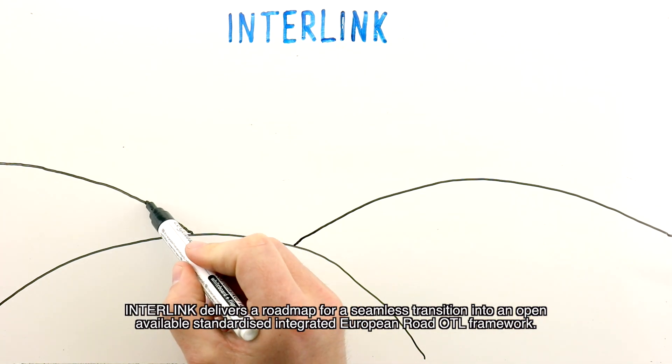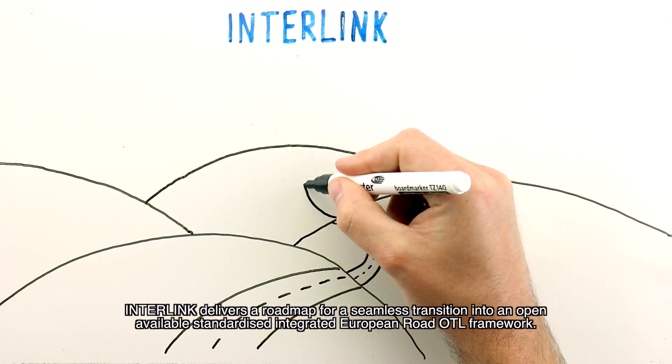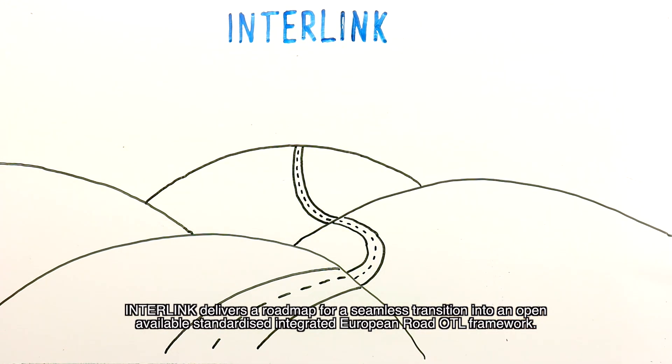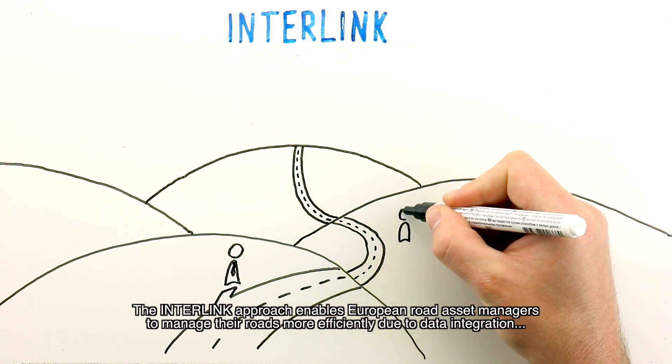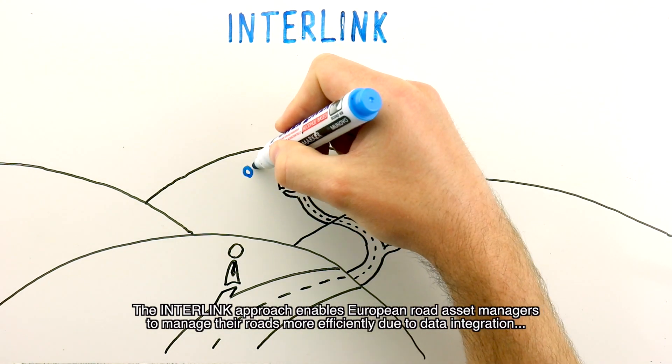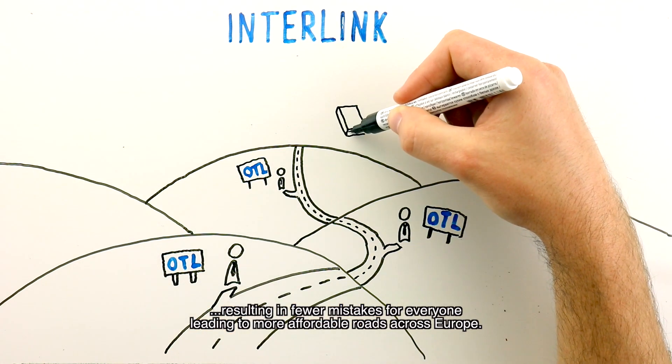Interlink delivers a roadmap for a seamless transition into an open, available, standardized, integrated European Road OTL framework. The Interlink approach enables European road asset managers to manage their roads more efficiently due to data integration, resulting in fewer mistakes for everyone.